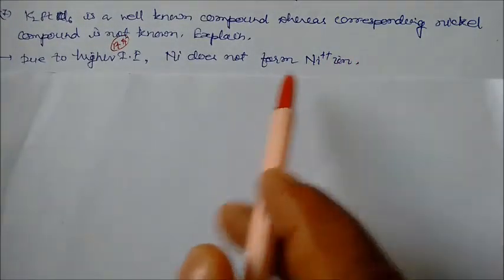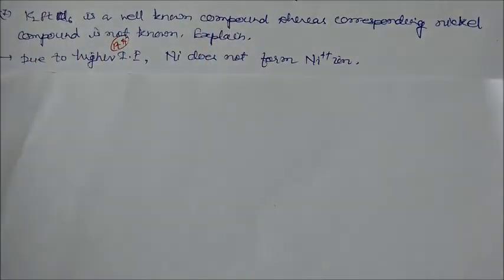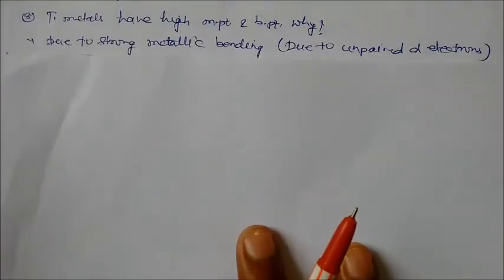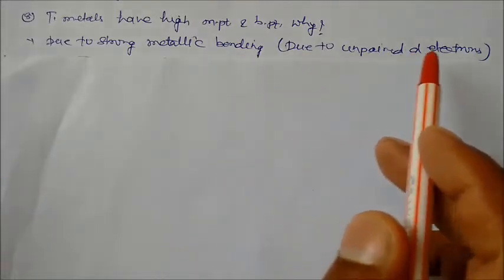d and f metals have high melting point and boiling point. Why? Because due to strong metallic bonding they have unpaired d electrons.